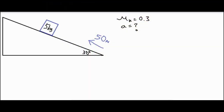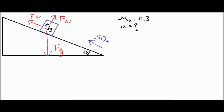In this video we're going to be taking a look at an object that is pushed up a ramp with a force of 50 newtons and then we're going to solve for the acceleration of the mass. The first thing we're going to do is draw the forces acting on the five kilogram block: the force of gravity pulling straight down, the normal force pushing straight up perpendicular from the ramp, an applied force of 50 newtons, and the force of kinetic friction opposing the slide.